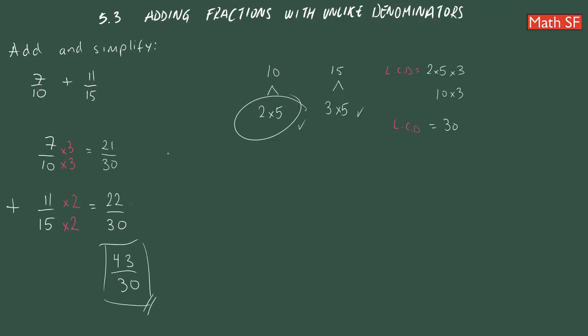Unless they ask you to convert this into a mixed number, then we will have to convert it. Now, let's do a review. How will we do that? It will be 30 into 43. We need to divide that.